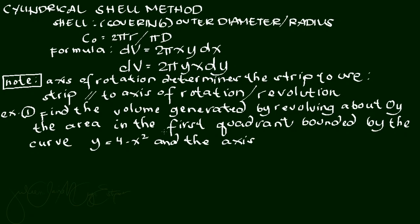Example number 1: Find the volume generated by revolving about the y-axis the area in the first quadrant bounded by the curve y = 4 − x² and the axes. The axes here include both the y-axis and the x-axis. The curve y = 4 − x² is a parabola.